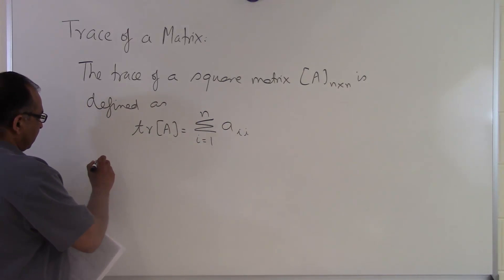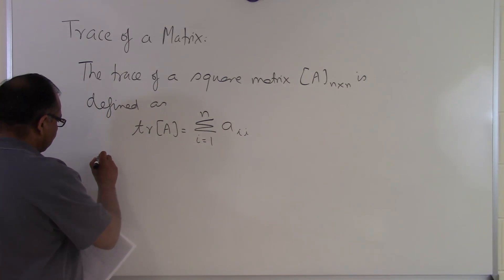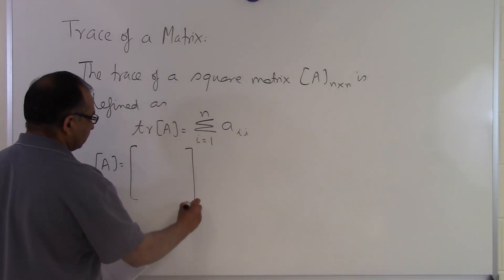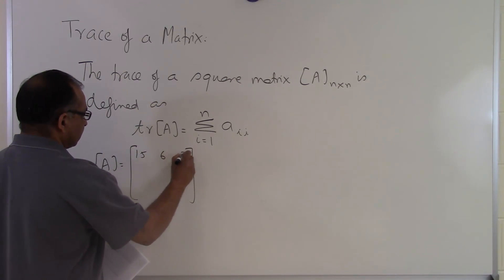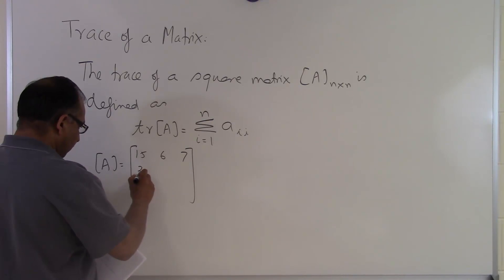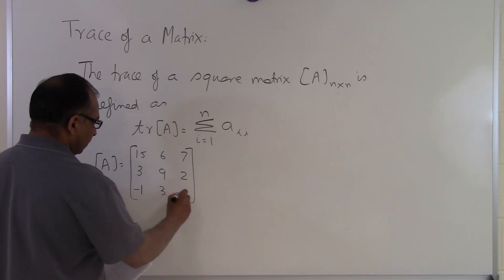Let's take an example. Suppose somebody says, hey, A matrix is given as 15, 6, 7, 3, 9, 2, minus 1, 3, minus 7.